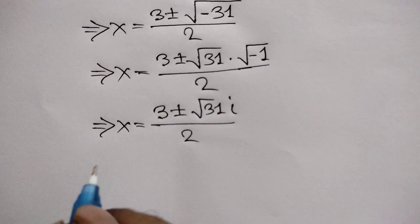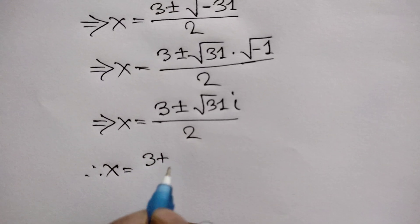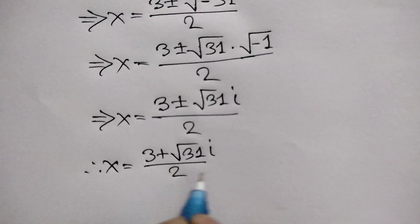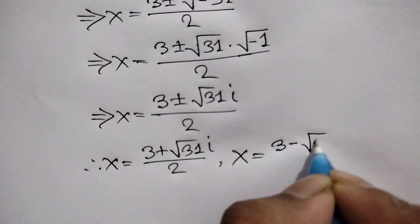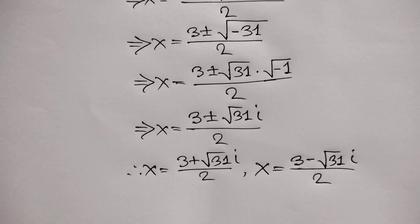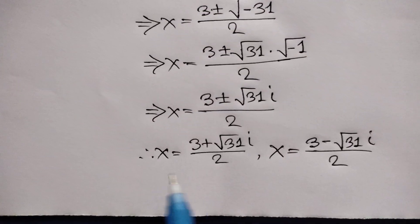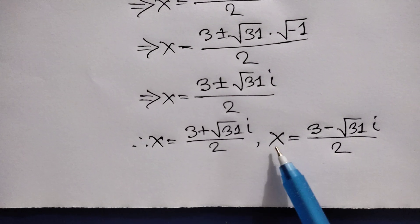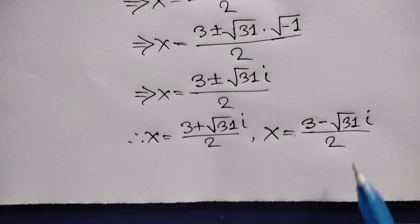So there are totally three values of x. The first value is x is equal to negative 3. The second value is x is equal to 3 plus square root of 31 times i, over 2. And the third value is x is equal to 3 minus square root of 31 times i, over 2.